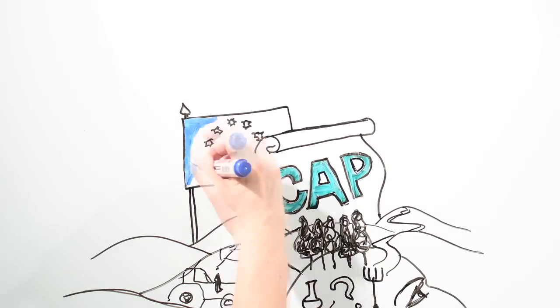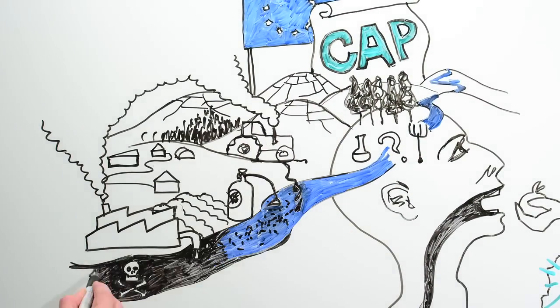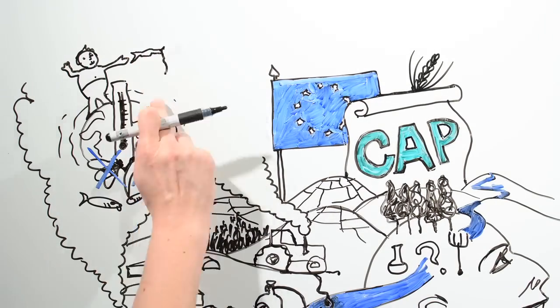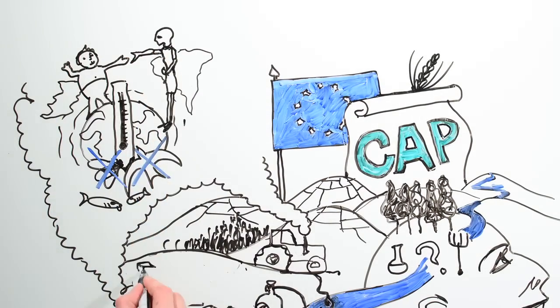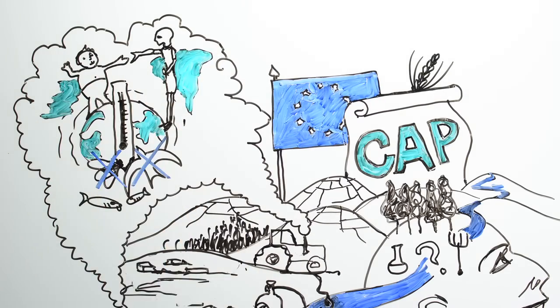However, decades of ever more industrial farming, of monocultures, pesticides and factory farming have had their effect. We are facing the loss of biodiversity, runaway climate change, serious pollution, rural depopulation, obesity here and hunger there.